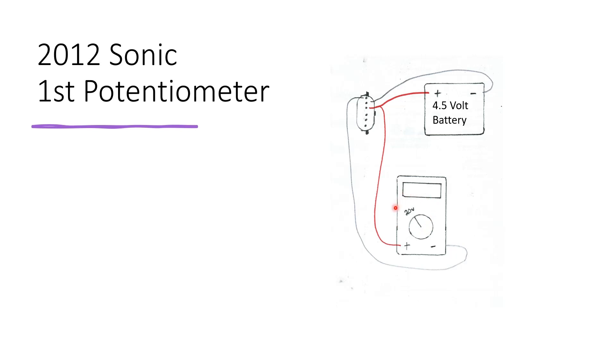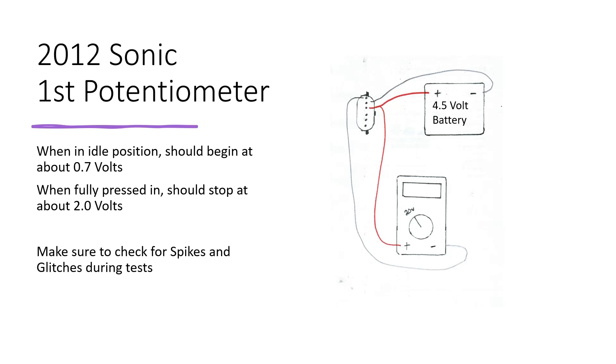Once you turn on the multimeter it should be set to 20 volts and it should be reading about 0.7 volts in the idle position. As you begin to press down on the pedal itself, it's going to be reading about 2 volts. During these tests you need to be looking for both spikes and glitches.